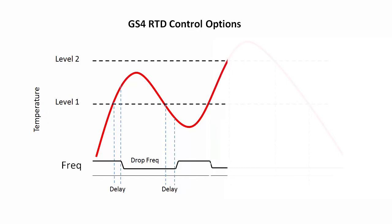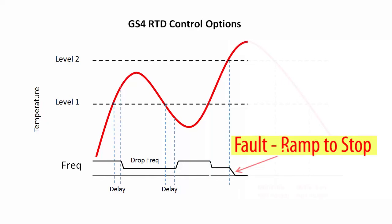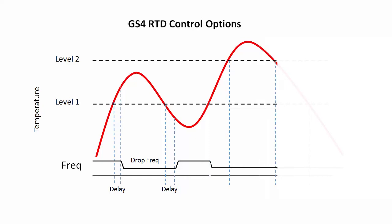If the temperature reaches level 2, the drive does whatever parameter 639 says it should do. It could just issue a warning, issue a fault and ramp to a stop, issue a fault and coast to a stop, or do nothing. Once the temperature reaches level 2, the only way to get the motor to resume normal operation is to clear the fault – it doesn't automatically recover like the level 1 condition did.